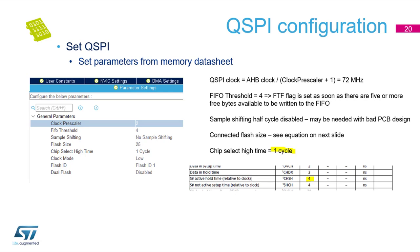Let's move to Quad SPI configuration. For this part, we need the memory datasheet where we can find the Quad SPI timing. The first parameter is the clock prescaler. If we want to run Quad SPI at 72 MHz, there is a formula to calculate the prescaler value: HAB clock divided by prescaler value plus 1. The FIFO threshold mainly depends on your application. If the MCU has many tasks to do, FIFO thresholds can be triggered soon; otherwise, if the MCU handles only Quad SPI data, FIFO thresholds may never occur. The FIFO threshold flag is set as soon as there are 5 or more free bytes available to be written to the FIFO.